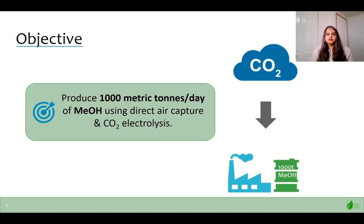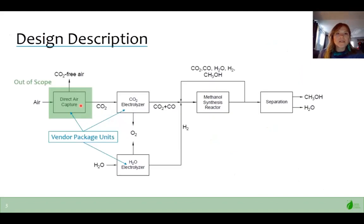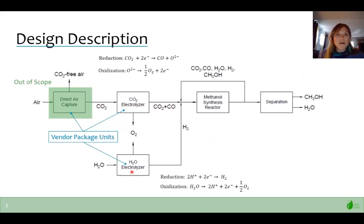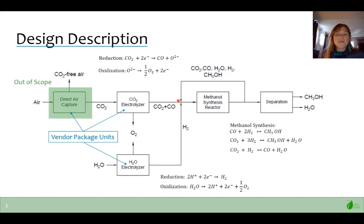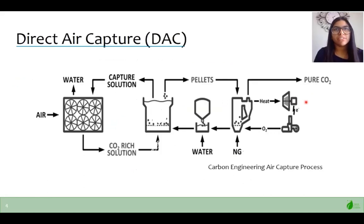Moving on to the design description. Our process begins by using direct air capture to sequester CO2, then create a concentrated stream of CO2 that is fed into the electrolyzer, where CO2 and CO are delivered downstream. Simultaneously, a second electrolyzer takes water and splits it into hydrogen and oxygen, where the hydrogen is carried downstream. The reactor takes the combined stream from the recycle stream and the electrolyzer products. The recycle stream contains mostly hydrogen. The separation unit is where methanol and water get separated. The importance of direct air capture is that it presents an opportunity to capture carbon dioxide from nonpoint sources such as transportation.